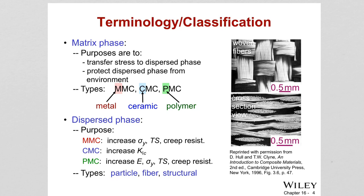Composites can be achieved at macro, micro, or nano length scales. A macro scale example is steel-reinforced concrete. A micro scale example is carbon or glass fiber reinforced plastics. At the nano scale, you have precipitation strengthening in alloys, like nano composites.